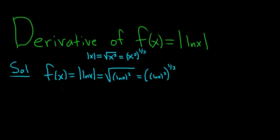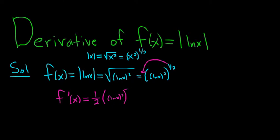So now we can take the derivative and we'll use the chain rule to do that. So f prime of x: put the one half in the front, so you get one half times (ln x)² to the negative one half. And now we have to multiply by the derivative of the inside — that's the chain rule. Here it's another chain rule because we have ln x squared, so we put the two in the front and get ln x to the first power times the derivative of the inside, which is one over x.